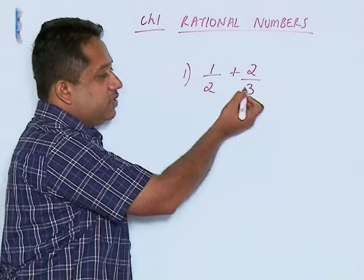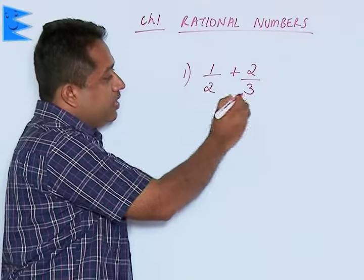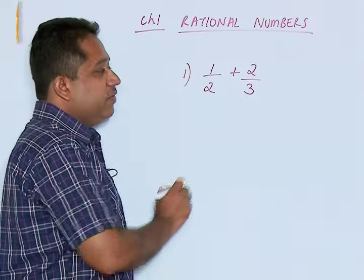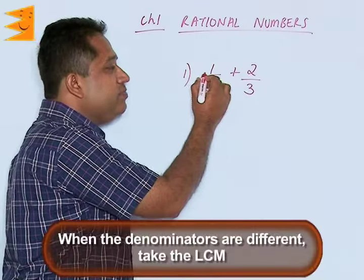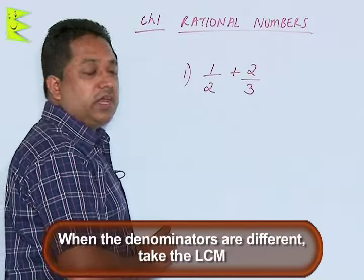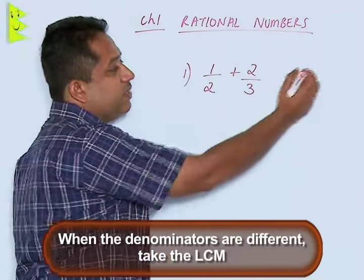This is a rational number, this is also a rational number but here the denominators are different. When the denominators are different, we simply cannot add the numerator and get the answer, we will have to take the LCM of 2 and 3.